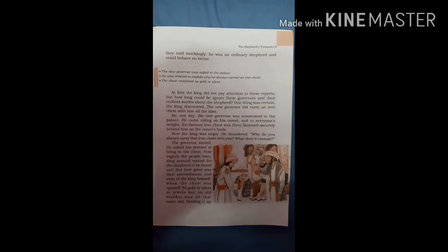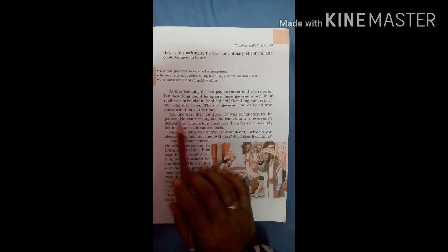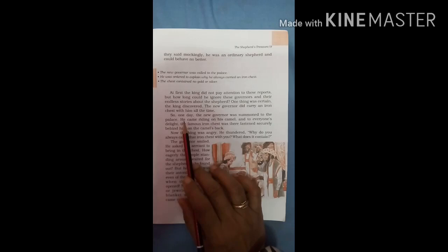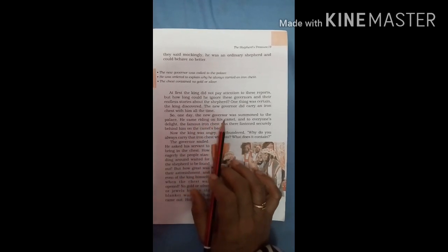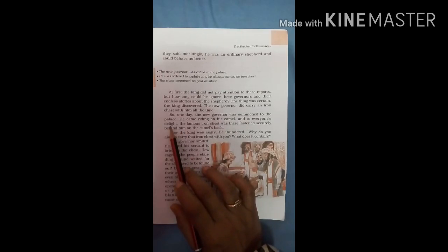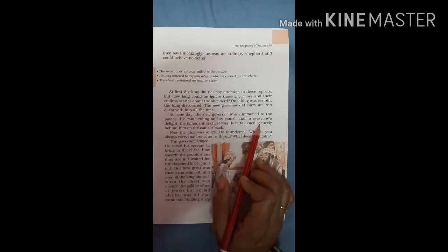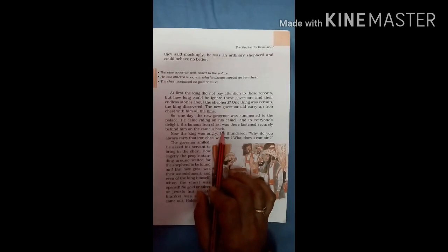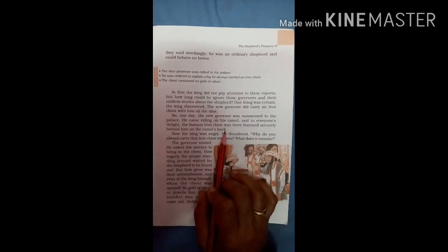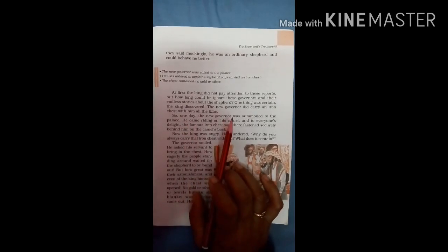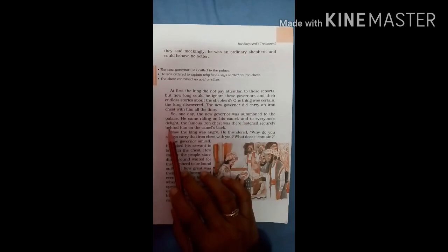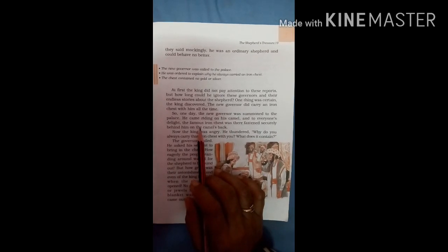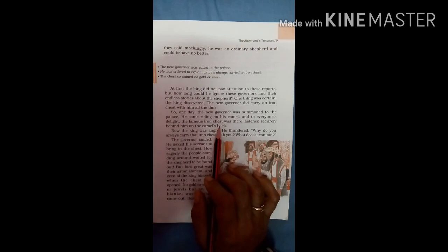So one day the new governor was summoned to the palace. The new governor was called to the palace. He came riding on his camel and to everyone's delight, the famous iron chest was there, fastened securely behind him on the camel's back. When the new governor came to the palace on his camel, everyone was delighted to see him, and they saw that the iron chest was also with him, kept on the camel's back.